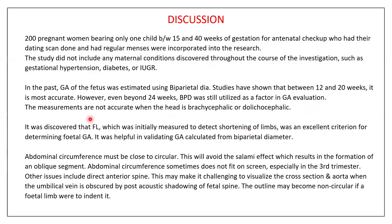Femur length, initially measured to detect shortening of limb, was found to be an excellent criterion for determining fetal gestational age, helpful in validating gestational age calculated from biparietal diameter. Abdominal circumference must be close to circular while measurement to avoid the salami effect, which results in an oblique segment. Abdominal circumference sometimes does not fit on screen, especially in the third trimester, and there are issues such as anterior spine, difficulty visualizing the aorta cross-section, and umbilical vein obscured by post-acoustic shadowing of the fetal spine.